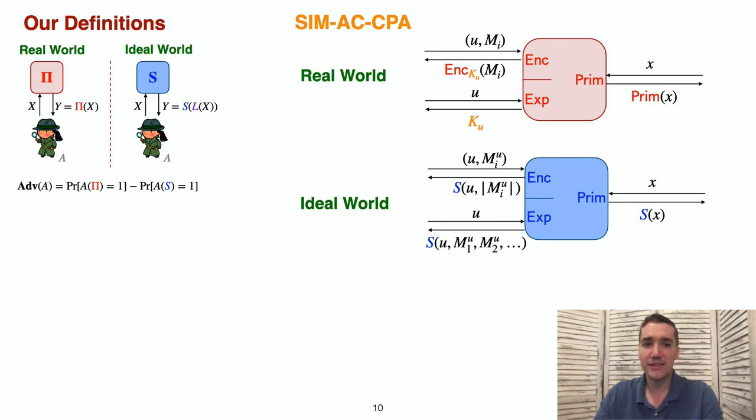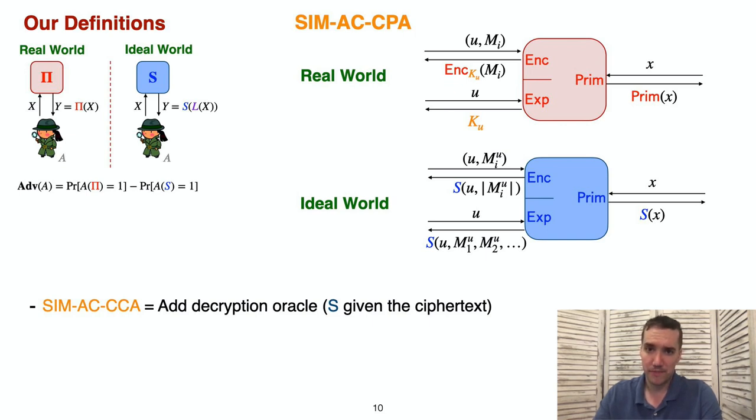To obtain the CCA version of our definitions, we simply add a decryption interface. The attacker is disallowed from querying this oracle on ciphertexts that are received from the encryption interface. In the ideal decryption interface, the simulator is given the ciphertexts that the attacker queries in the clear. For symmetric crypto, it's common to target strong notions such as key privacy, indistinguishability of ciphertexts from random bits, or authenticated encryption, which combines security both of confidentiality and integrity. Each of these can be captured in our setting by placing appropriate restrictions on the behavior of the simulator.